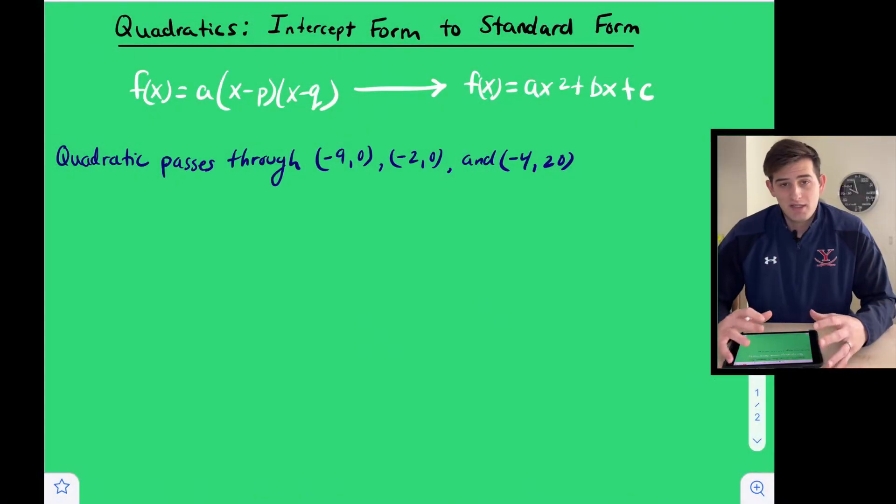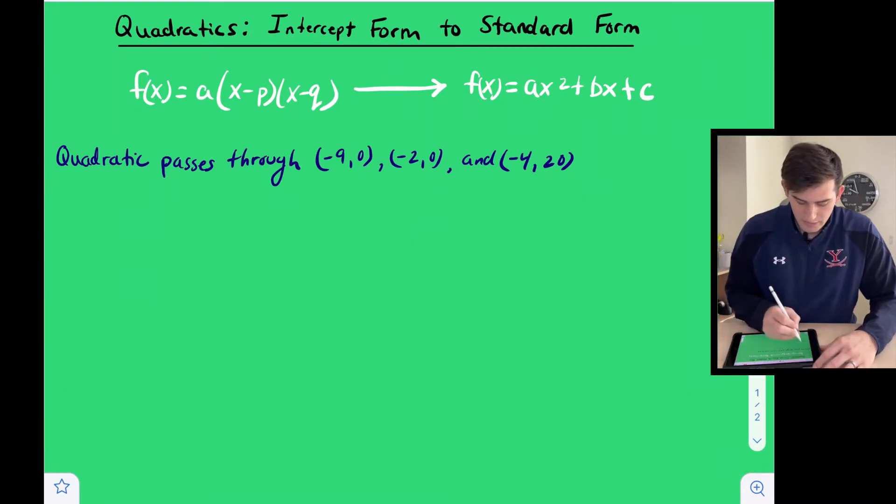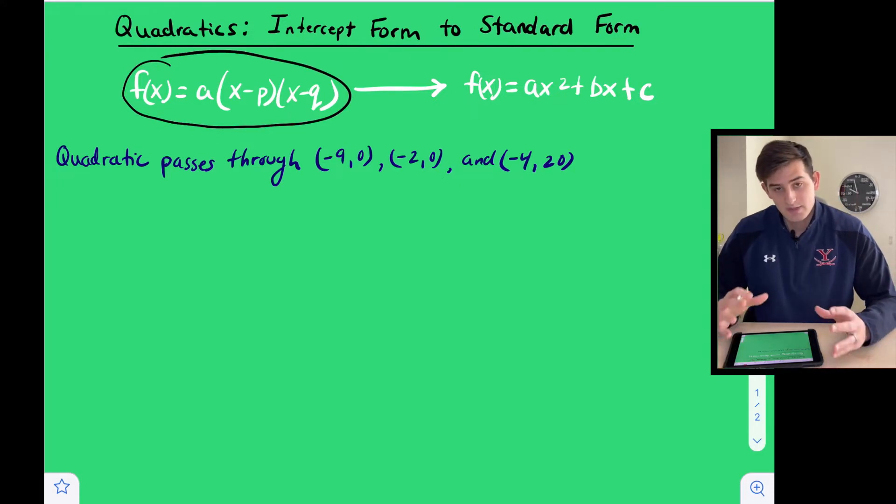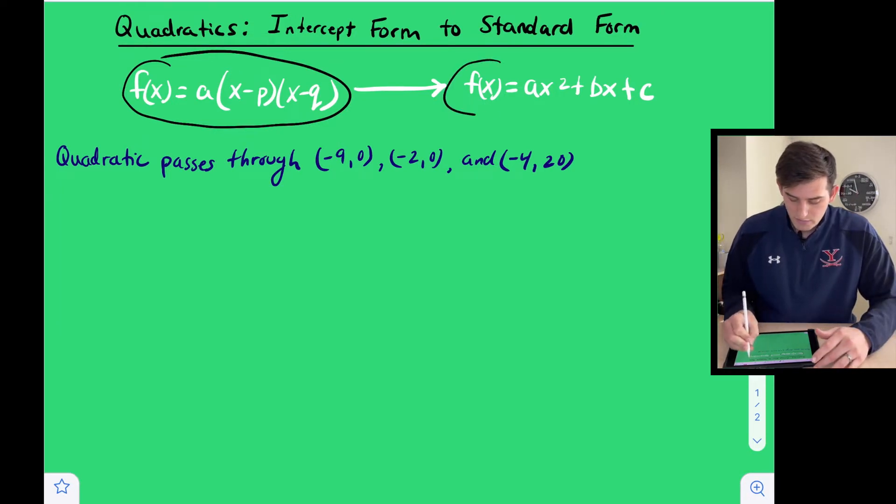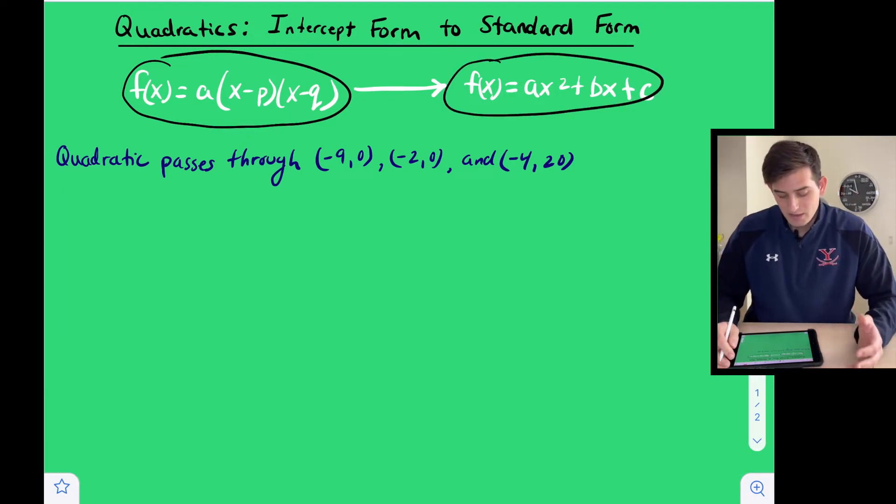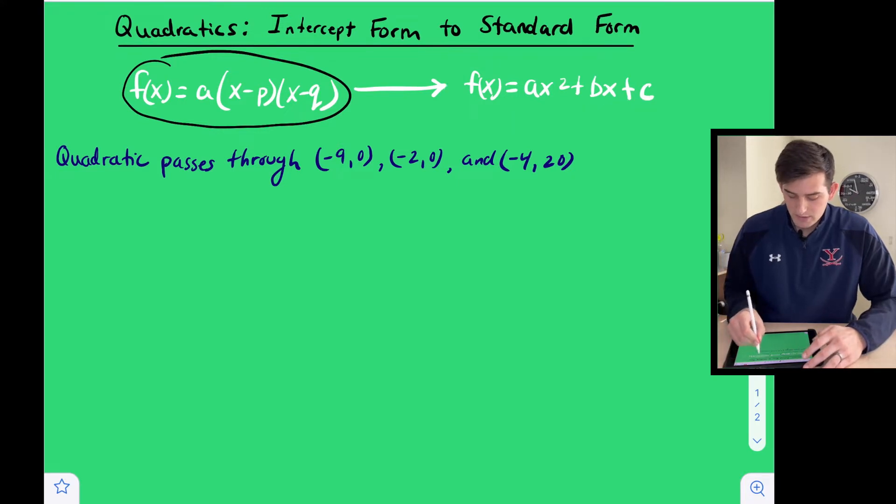Hello everyone, in this video we're going to talk about how to take a quadratic that's in intercept form and transform it to standard form. So we start with what our intercept form looks like: f of x equals a times x minus p times x minus q, and remember p and q are our x-intercepts. And then we want to get it to standard form which is f of x equals ax squared plus bx plus c.